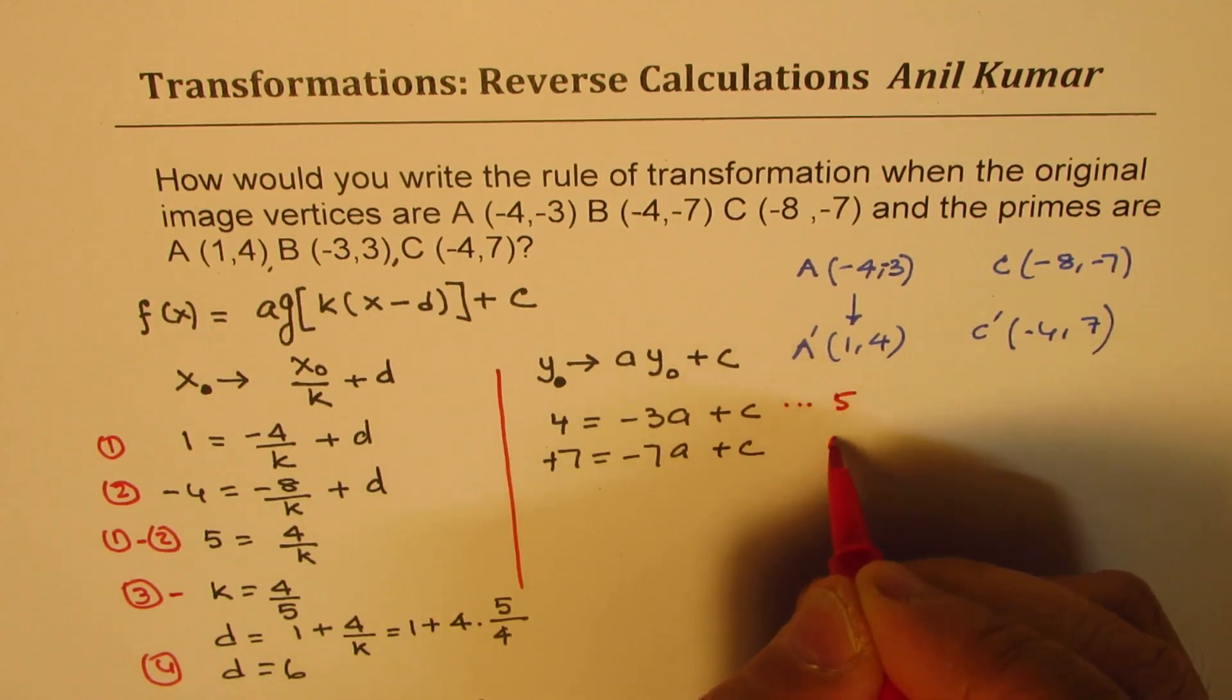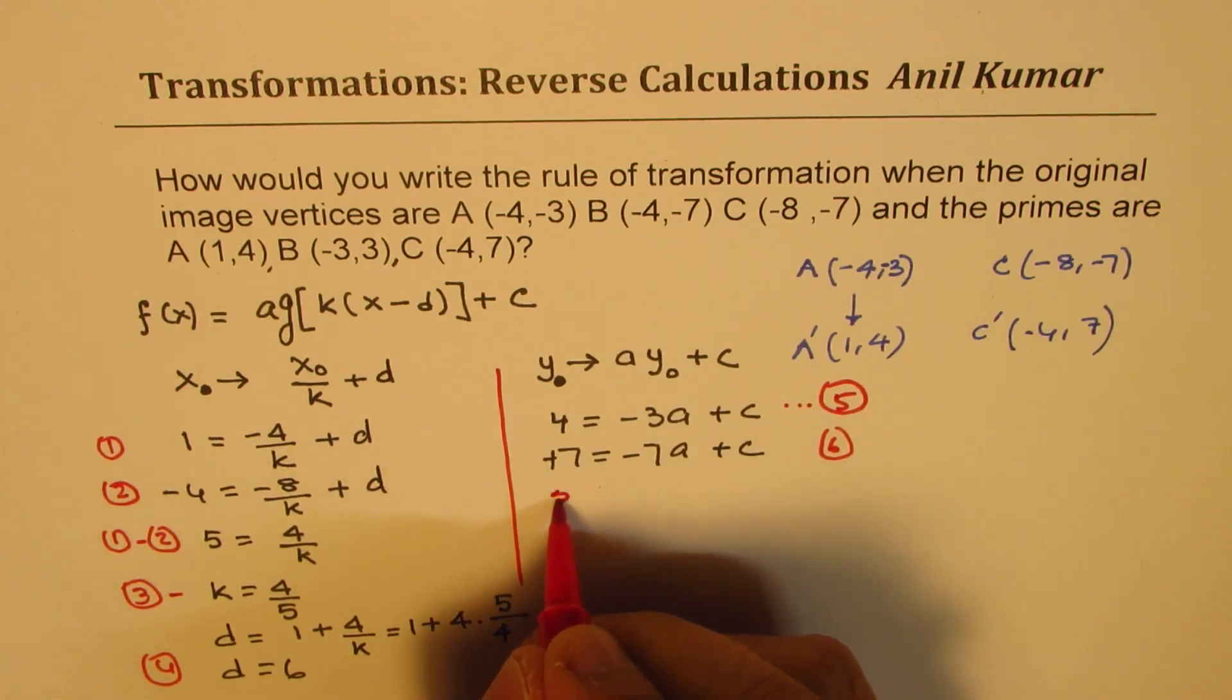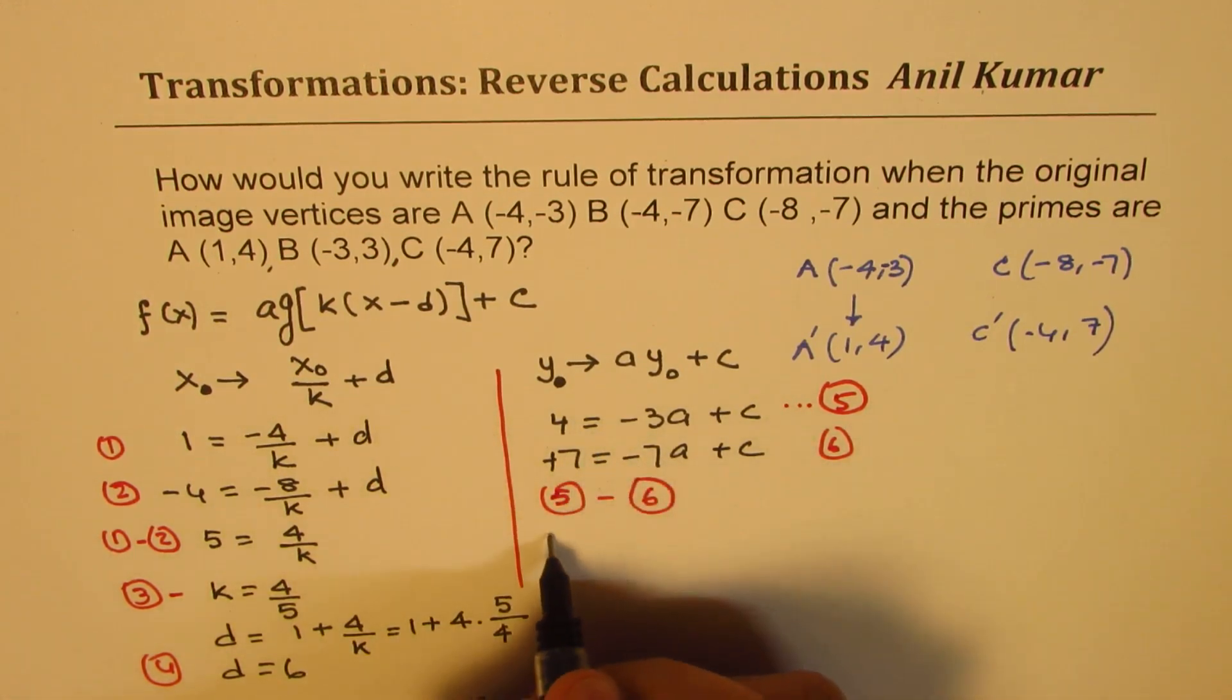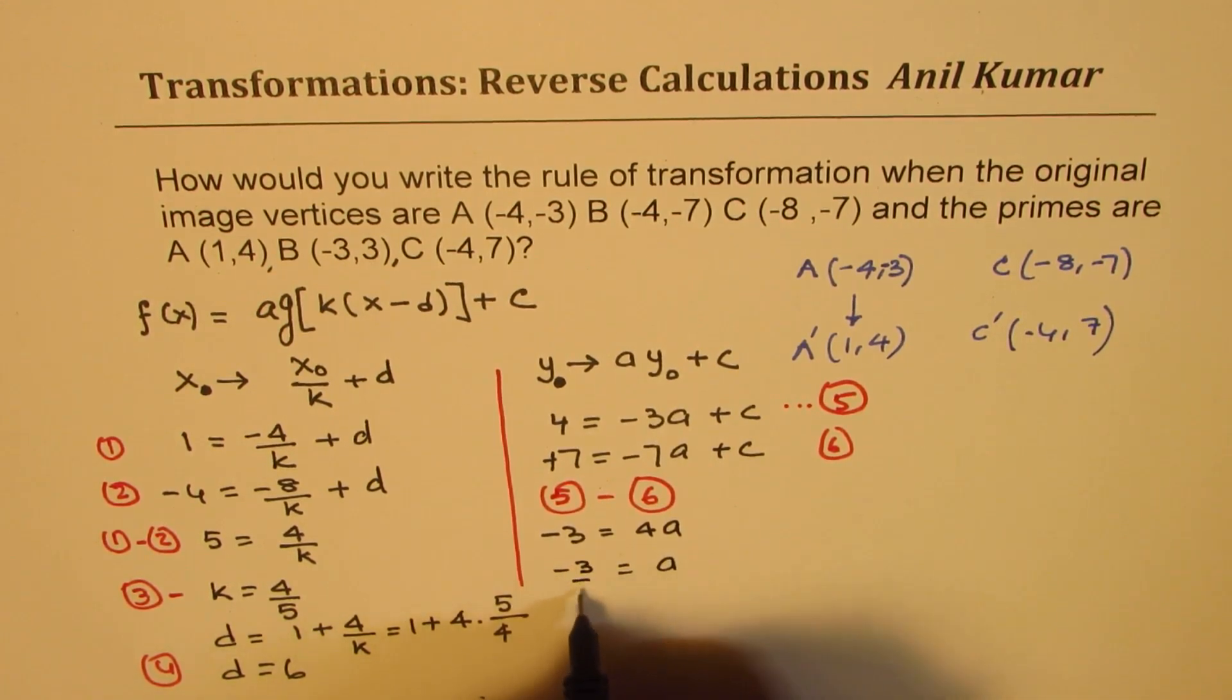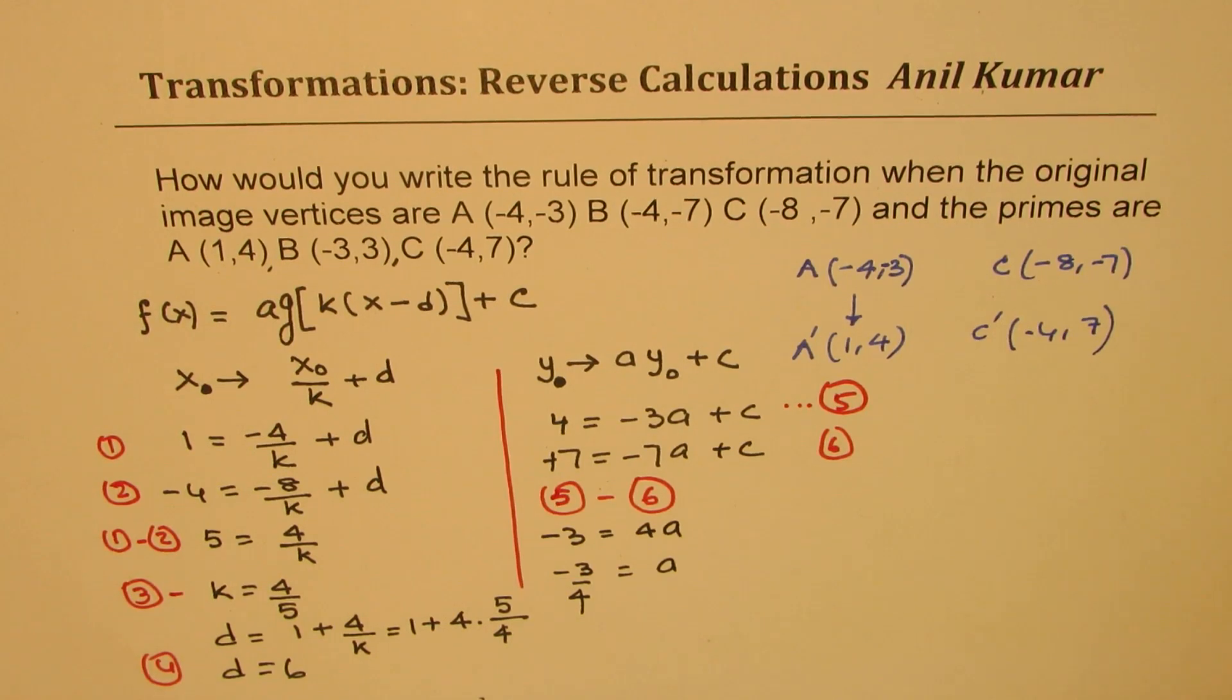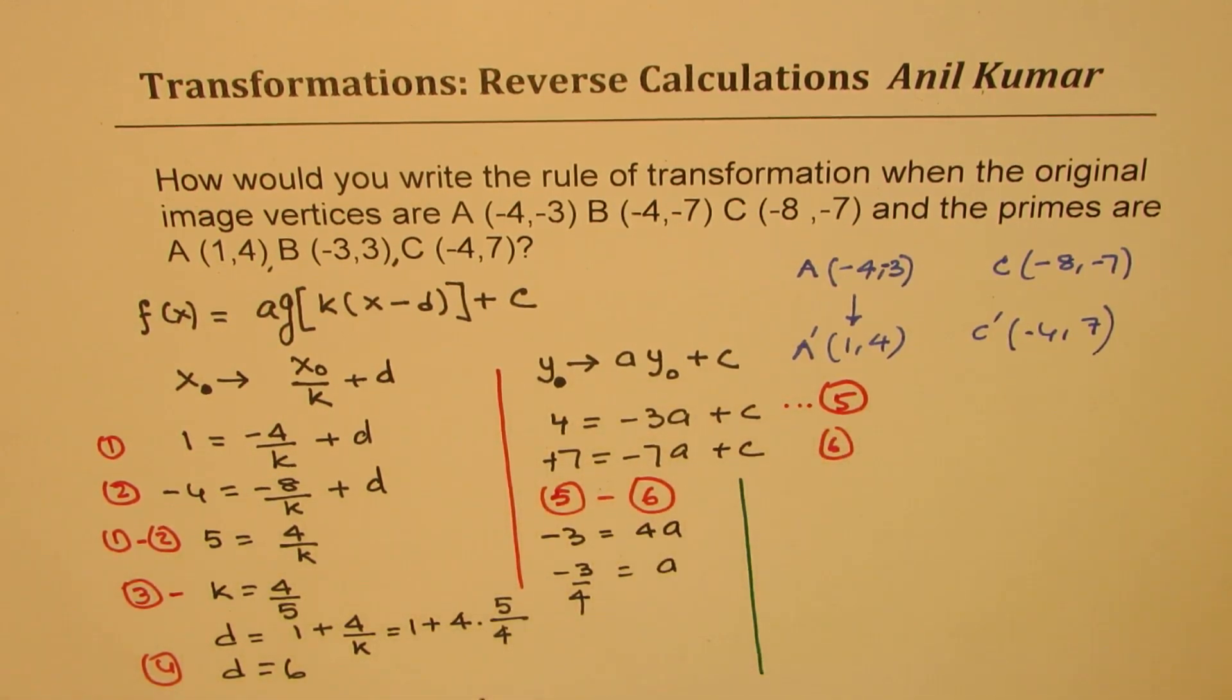Now if I take away—let's say we do 5 take away 6—then what do we get? We get -3 here, and this gives you 4a, or a = -3/4.